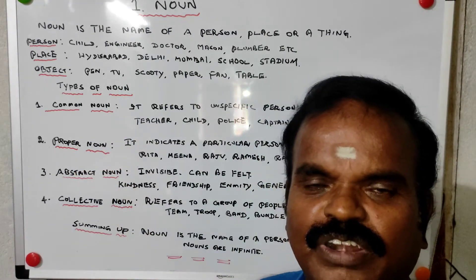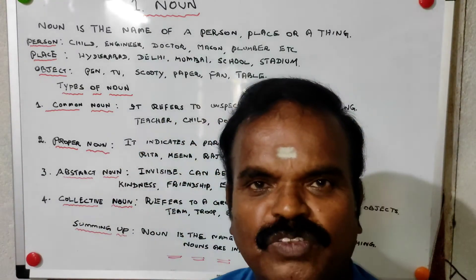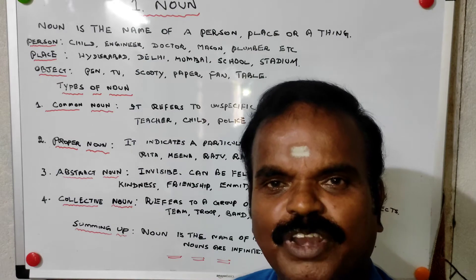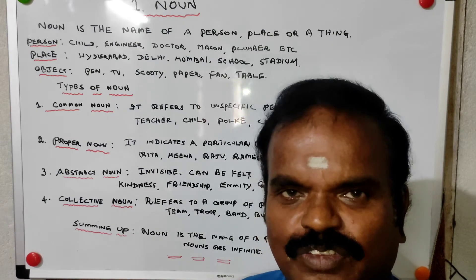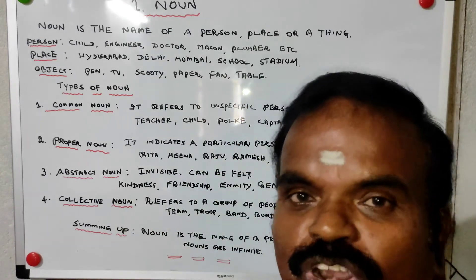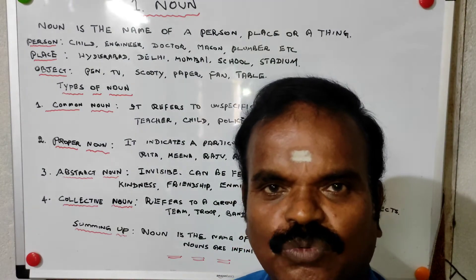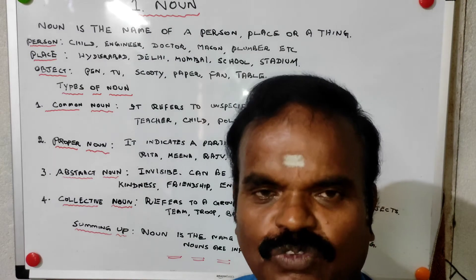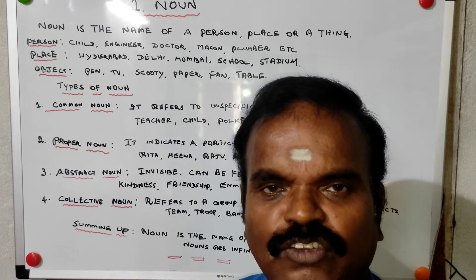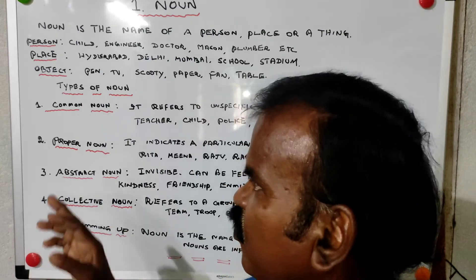Common noun — for example, 'teacher.' It refers to an unspecific, unparticular person or thing. Is the teacher male or female? Nothing is specified. Other examples: child, police, captain, coach. Captain may be a lady also. So these are all common nouns — they are not referring to a particular person.